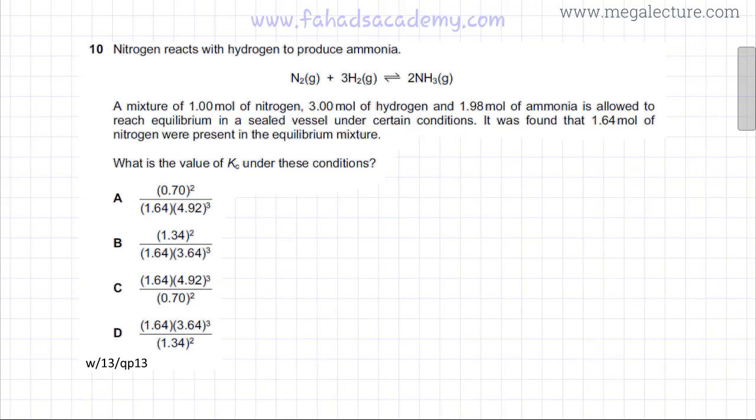The following past paper question. The question reads that nitrogen reacts with hydrogen to produce ammonia. They've given you a reaction of the Haber process where nitrogen is reacting with hydrogen and it is producing NH3 and it's a reversible reaction.